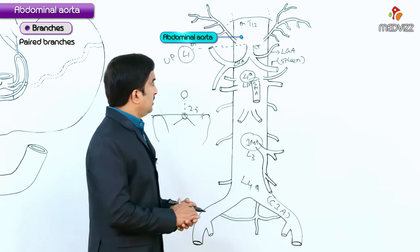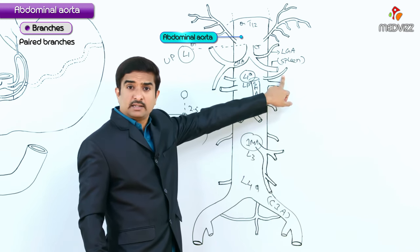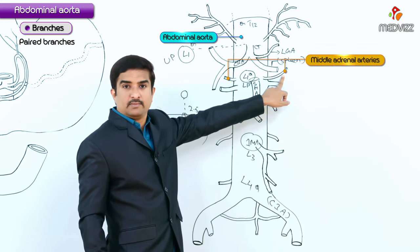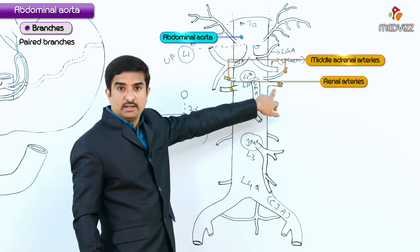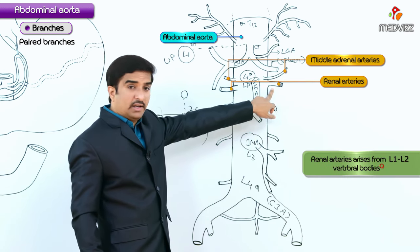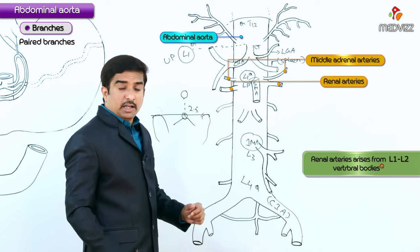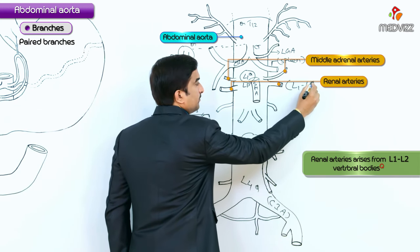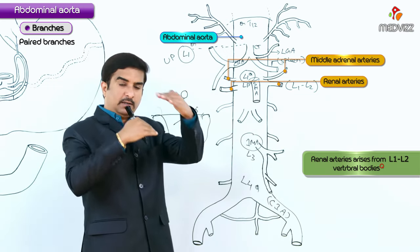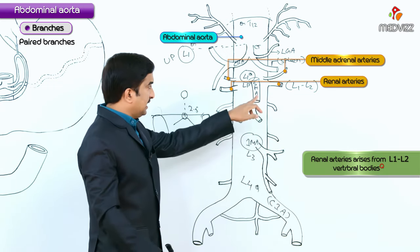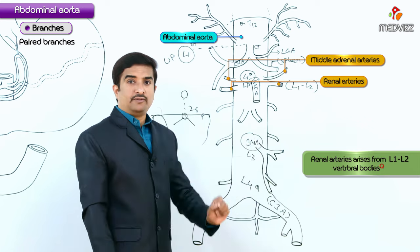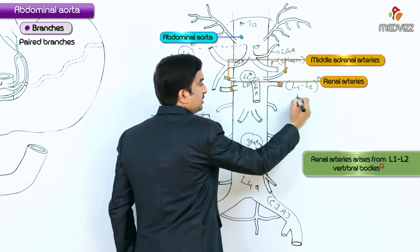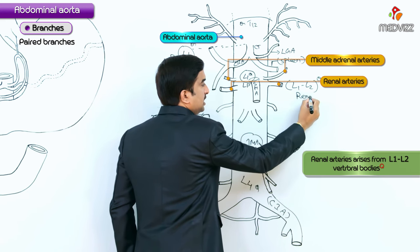Now let us discuss the paired branches. The first paired branches are the middle adrenal arteries, followed by the renal arteries. The origin of the renal arteries is between the vertebral bodies L1 and L2 — an important MCQ point. So L1–L2 represents the origin of the renal arteries.